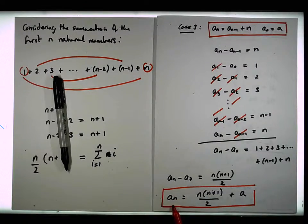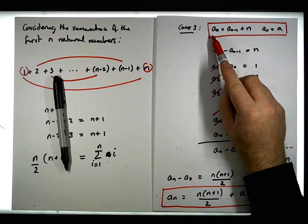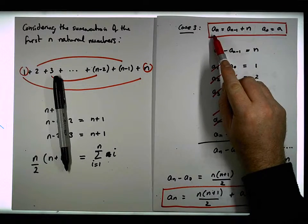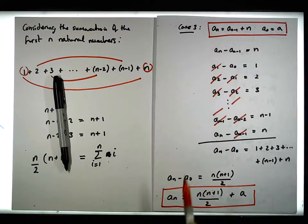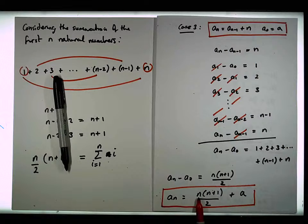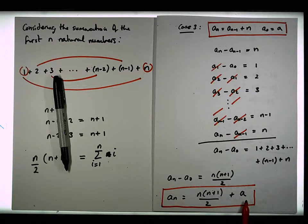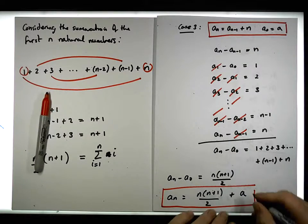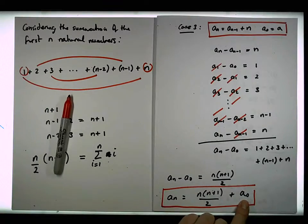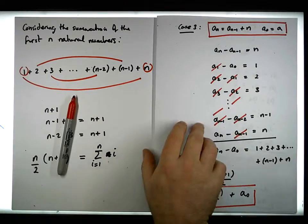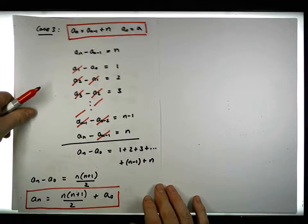So if you want to find the nth term from a recurrence that looks something like this, the nth term is simply equal to n times n plus 1 over 2 plus a0, where a0 is the base case. Let's continue now and make something a little bit more complicated.